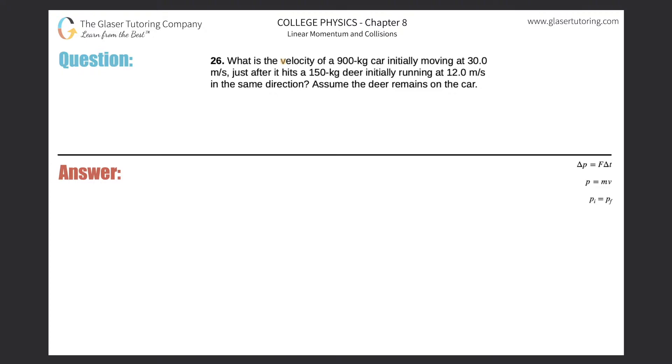Number 26. What is the velocity of a 900 kilogram car initially moving at 30 meters per second just after it hits a 150 kilogram deer initially running at 12 meters per second in the same direction? Assume the deer remains on the car.